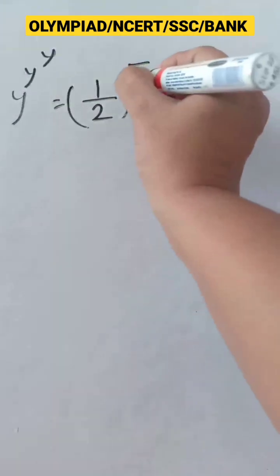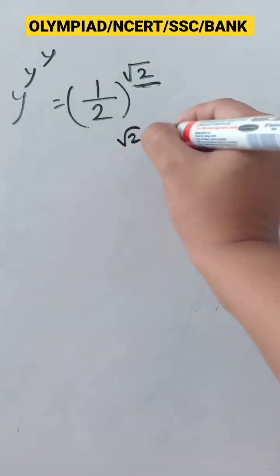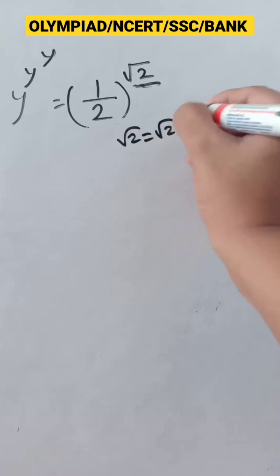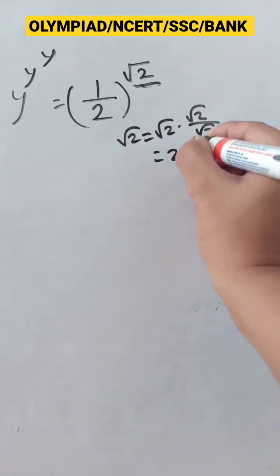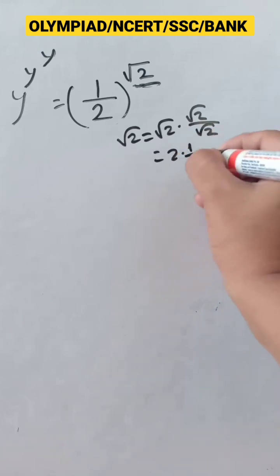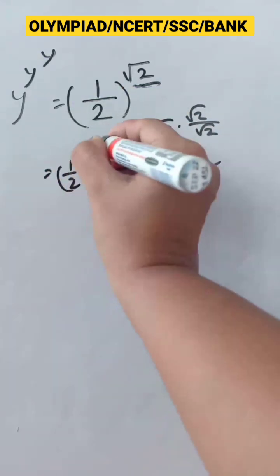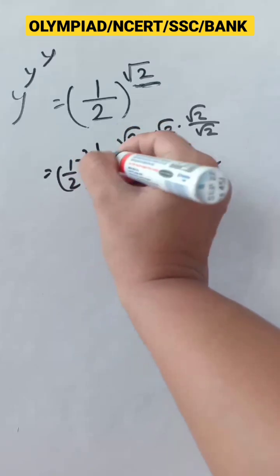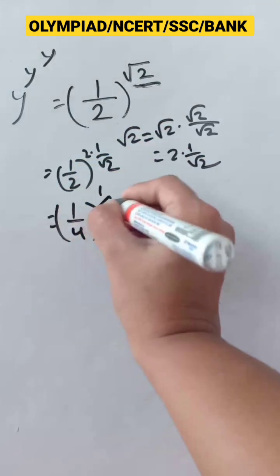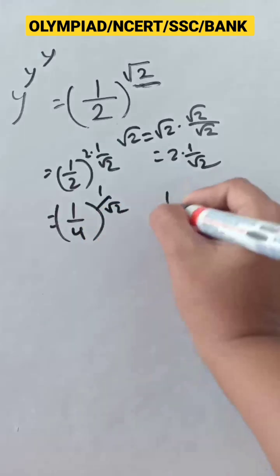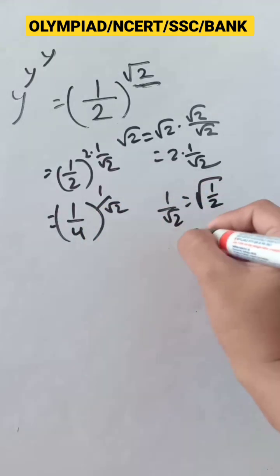What is the value of y? First, we are going to calculate the power. Square root of 2 — we can write it as square root of 2 into square root of 2 by square root of 2, so it comes 2 into 1 by square root of 2. We can write it as 1 by 2 to the power 2, into 1 by square root of 2, so it comes 1 by 4 to the power 1 by square root of 2. Now, 1 by square root of 2 equals square root of 1 by 2.